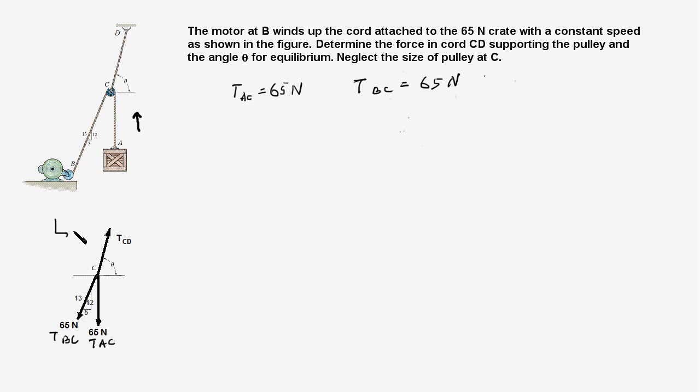This is the X-axis and this is the Y-axis. The sum of all forces in the X direction equals zero. This means TCD cos theta, which is the X component of TCD, minus the X component of TBC—that's 65N, and the X component is 5/13 multiplied by 65, which equals 65 × 5/13. This equals zero, which simplifies to TCD cos theta equals 25. That is equation one.